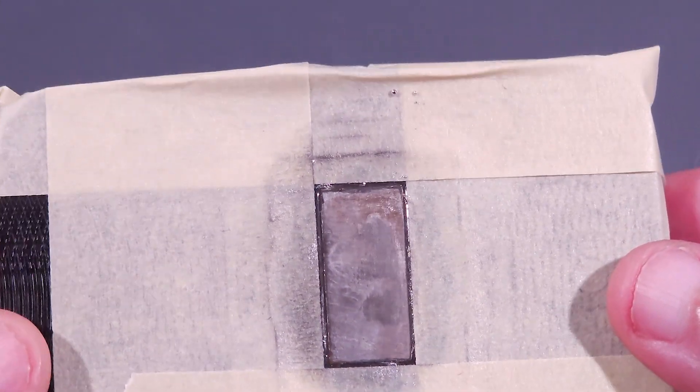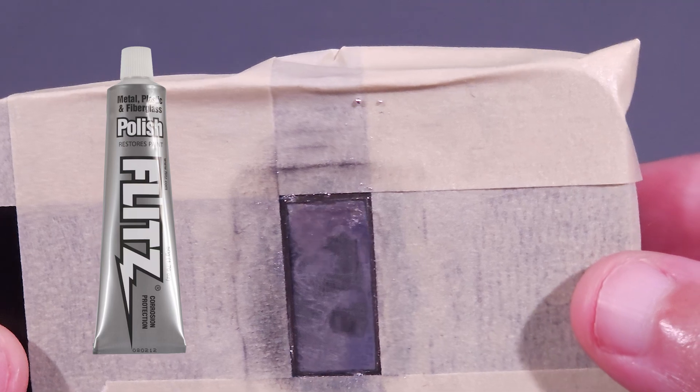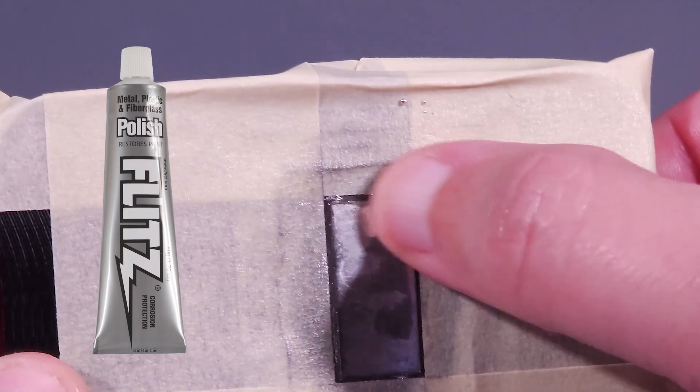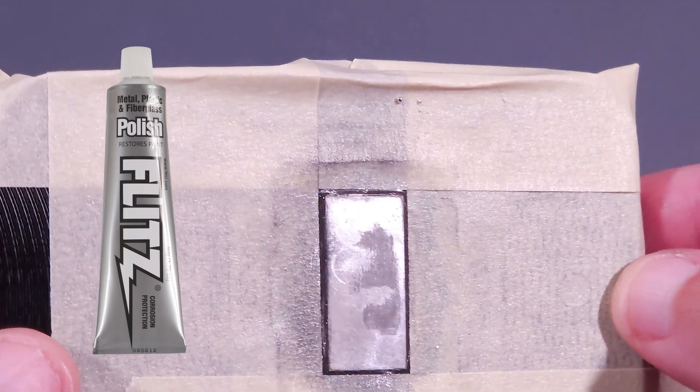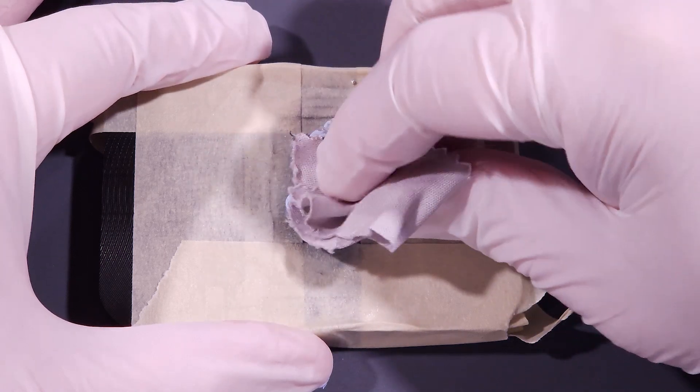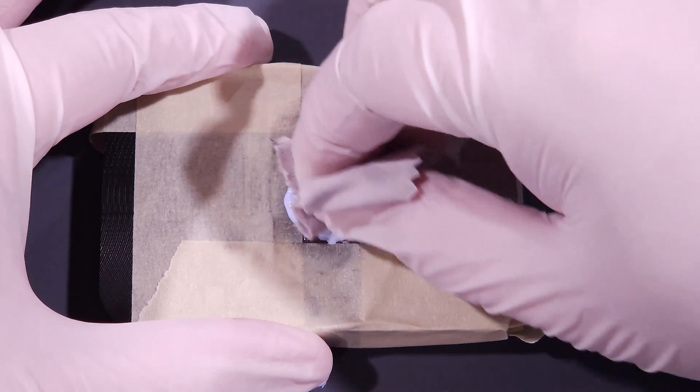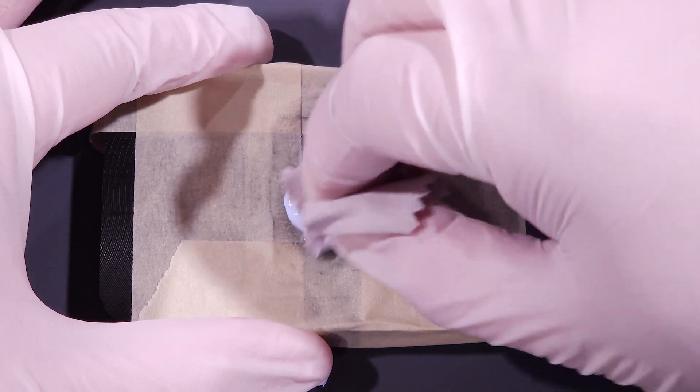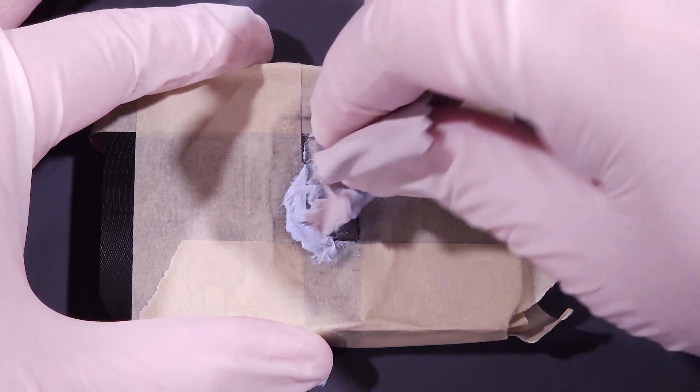My polishing paste of choice is the Flitz Metal Polish and Cleaner, which is the same paste the Rocket Cool folks use as part of their delidding process. I'll dab a small bit on a strip of microfiber eyeglass cleaning cloth and slowly work in circles to clean the die surface. This step usually takes a few times to clean adequately as well.